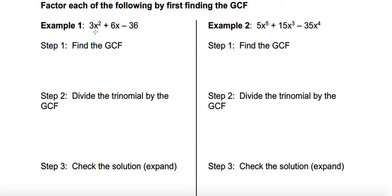What is the largest number that will divide evenly into each of these terms? In this case it's going to be 3. 3 divides evenly into 3, 3 divides evenly into 6, and 3 divides evenly into negative 36. Once I've determined the number, I need to ask myself: do I have any common letters? The last term is just a number, so there is no letter that I can use as part of my greatest common factor. So 3 is my greatest common factor.